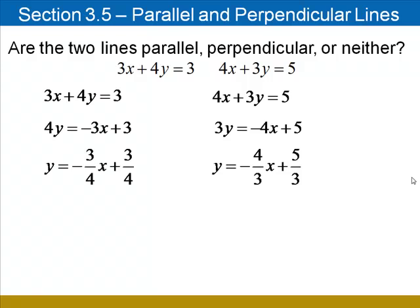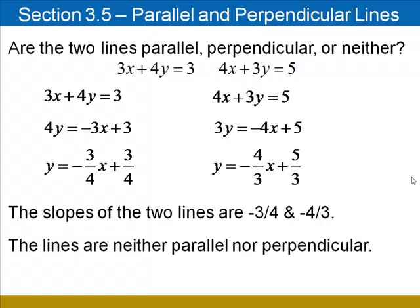These two lines are not parallel because the two slopes are not equal to each other. These two lines are not perpendicular either because even though the slopes are reciprocals, they do not have opposite signs. One of the slopes must be positive, the other must be negative. So these two lines are neither parallel nor perpendicular.